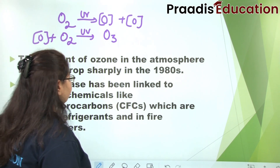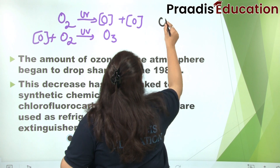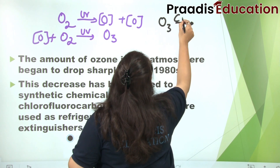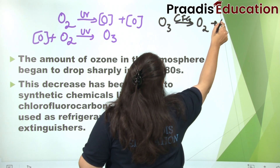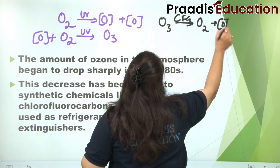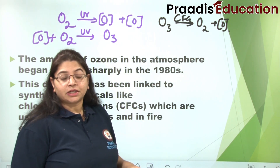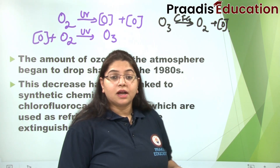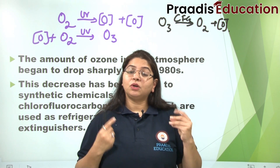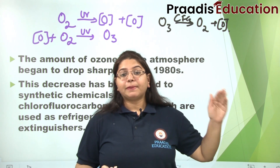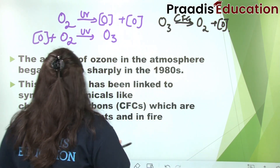Ab ozone deplete kaise ho rahi hai? Iska ulta ho raha hai — jab O3 ke upar chlorofluorocarbons (CFCs) act karte hain, toh woh isko break kar dete hain into O2 and O. Jitni speed se ye breakdown ho raha tha, utni speed se ban nahi raha tha. Agar dono chizein baraabari se hoon toh koi problem nahi, but breakdown bahut jaldi ho rahi thi aur formation slow thi. Isi liye ozone patli hoti gayi — deplete ho gayi, aur ozone hole ban gaya.